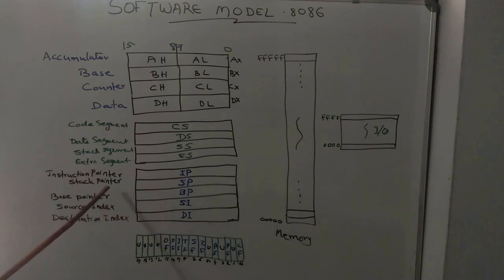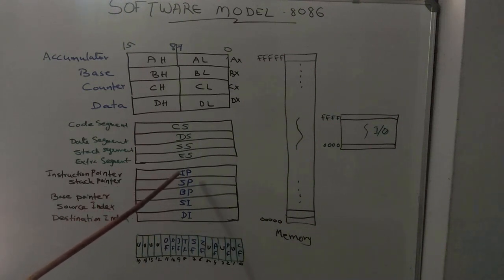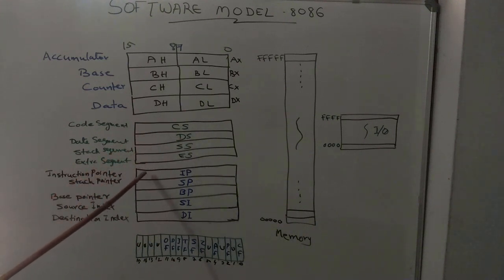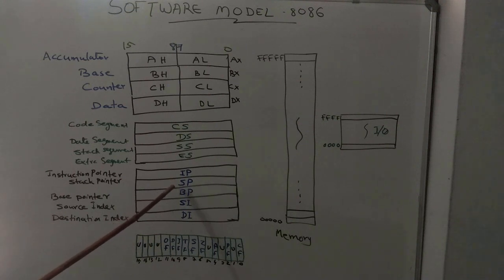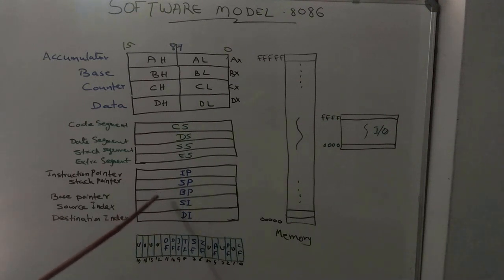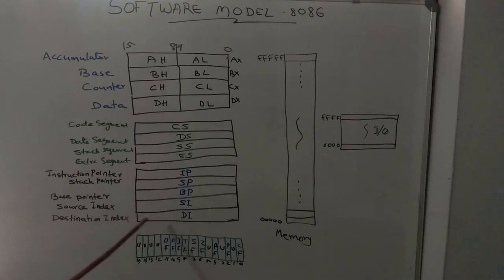Next comes the pointer registers. IP is the instruction pointer register. It works with the code segment and stores the address of the next instruction to be executed. SP is the stack pointer register, which points to the next item to be pushed. BP is the base pointer. SI is the source index and DI is the destination index.